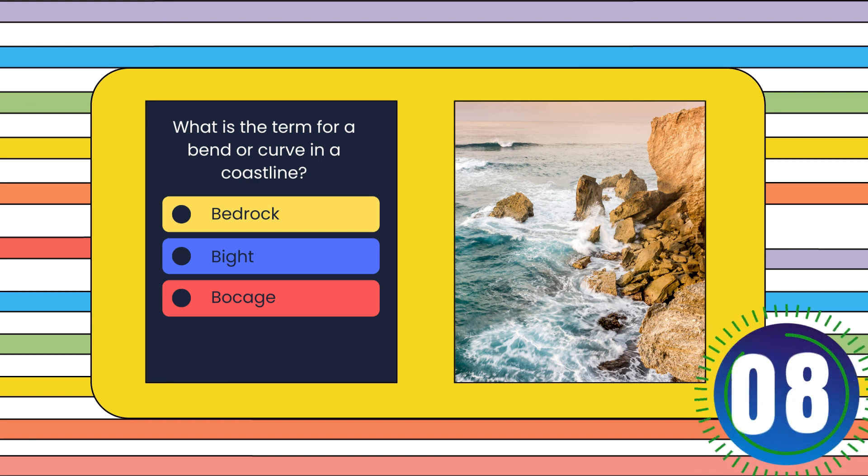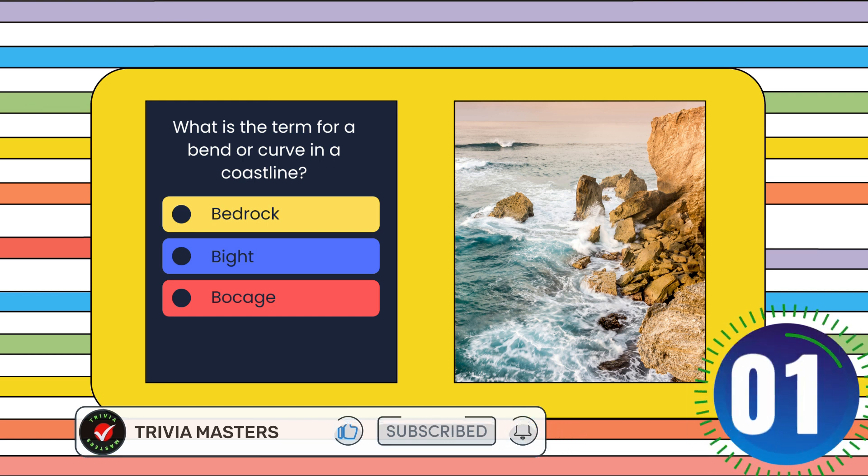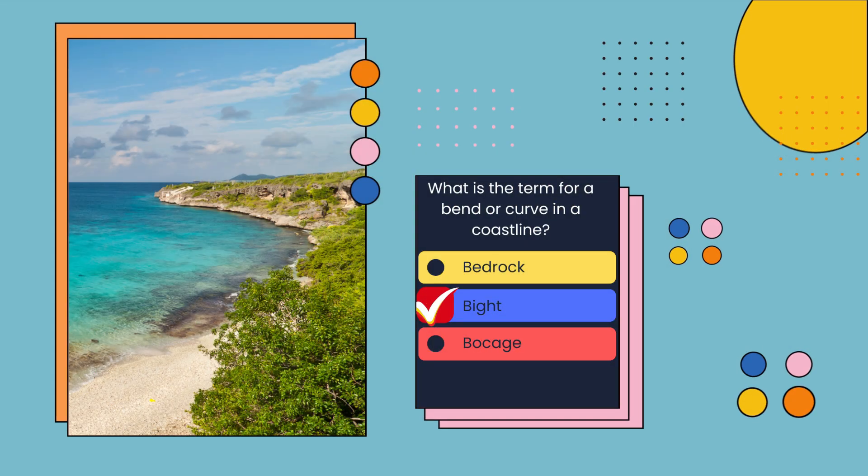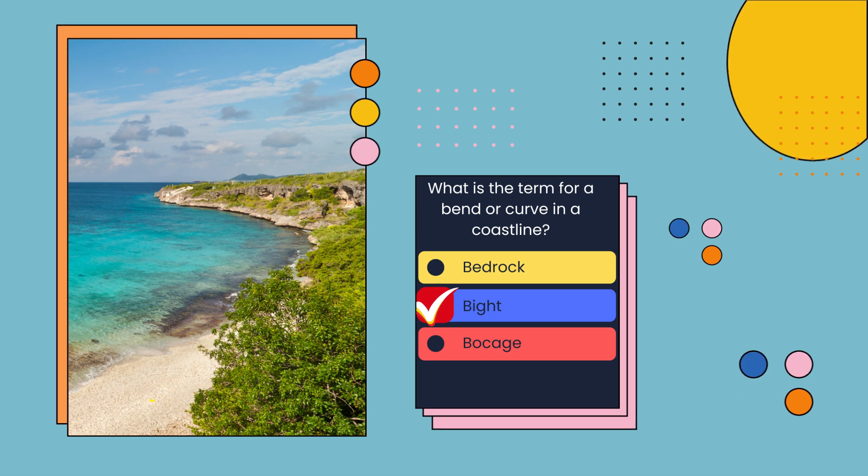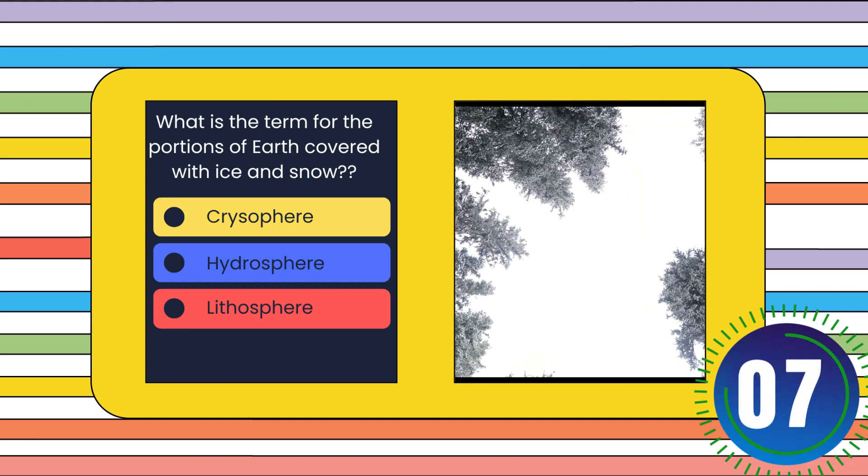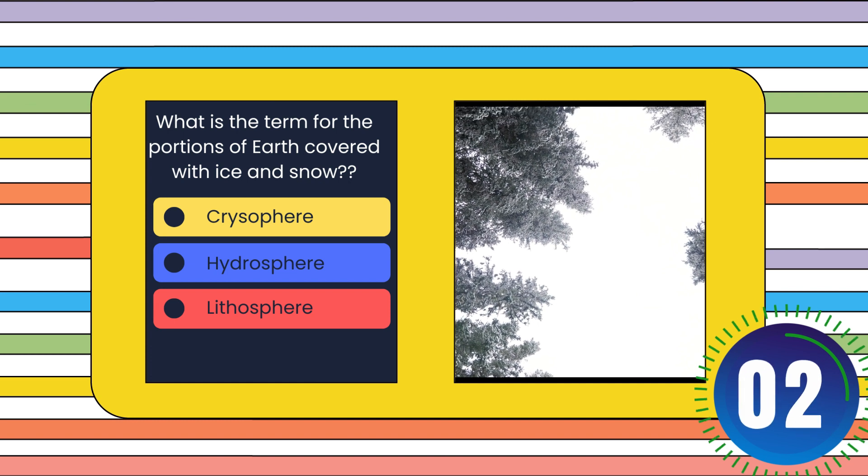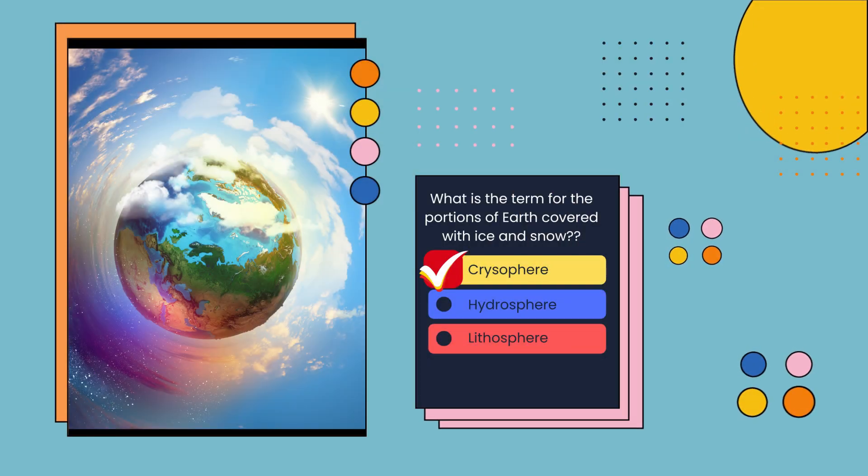What is the term for a bend or curve in a coastline? Bedrock, bight, or bocage? Bight. What is the term for the portions of Earth covered with ice and snow? Cryosphere, hydrosphere, or lithosphere? Cryosphere.